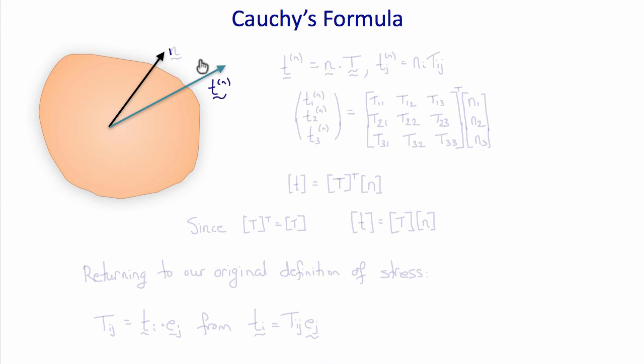So in summary, Cauchy's formula defines the stress in terms of the traction acting on the surface with unit normal n, such that T superscript n equals n dot T, or the jth component of T equals the i-th component of n times the i-jth component of the stress tensor. This is called Cauchy's formula, and the stress defined this way is called Cauchy's stress tensor.